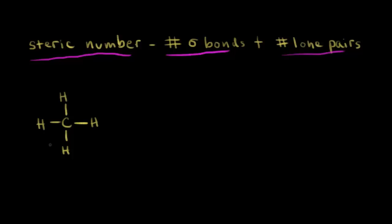Let's go ahead and do it for methane. The steric number is equal to the number of sigma bonds. I look around my carbon and I see one, two, three, and four sigma, or single bonds. So I have four sigma bonds. I have zero lone pairs of electrons around that carbon. So four plus zero gives me a steric number of four.